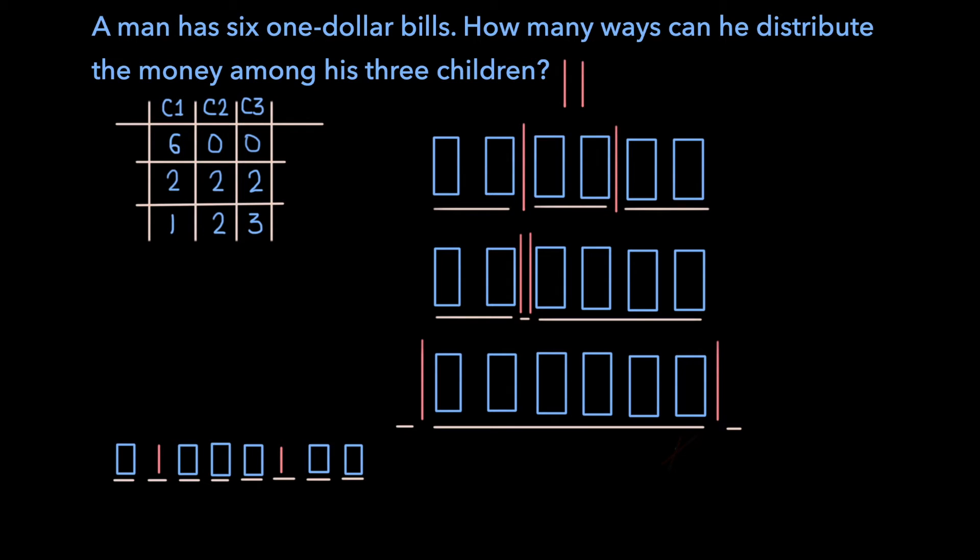And so ultimately, the answer to this problem is the number of ways we can choose two spots out of eight to place dividers in. And that is, of course, eight choose two, which is 28.